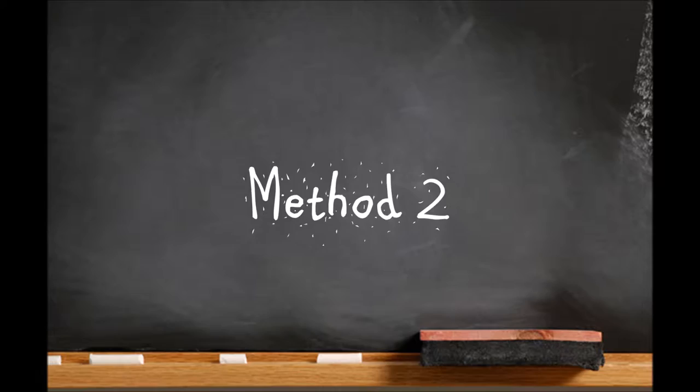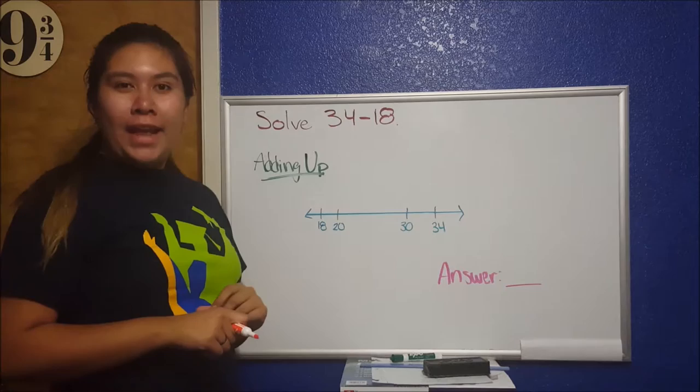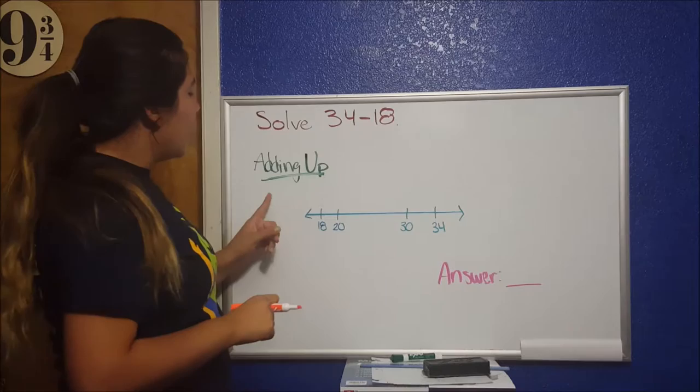So for method number 2 we're going to use something called adding up. Now in method number 1, regrouping and borrowing, that's what we're used to. But if we add up or count up it can be easier.